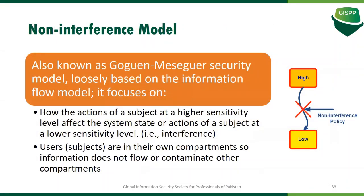The non-interference model, also known as the Goguen-Meseguer security model, is loosely based on the information flow model. It focuses on how the actions of a subject at a higher sensitivity level affect the system state or actions of a subject at a lower sensitivity level. Subjects at a higher sensitivity level have no interference with subjects at a lower sensitivity level and vice versa, ensuring information is not shared or leaked from one level to another.